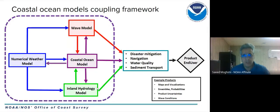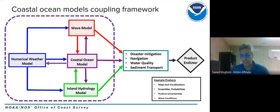The purple area envisions the possible coupling framework for coastal ocean modeling, including wave components, inland hydrology model, numerical weather model, and potentially sea ice. What we want to support are different end-user needs: disaster mitigation like storm surge modeling, navigation, water quality, and sediment transport — and these needs dictate how to configure the coupled application.